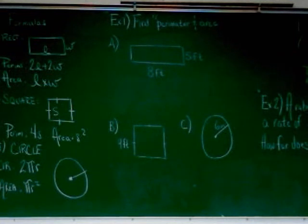All right, so let's go ahead and start with example 1, where we're asked to find both the perimeter and the area for all three shapes. We'll start with the rectangle, and we'll start with the perimeter.